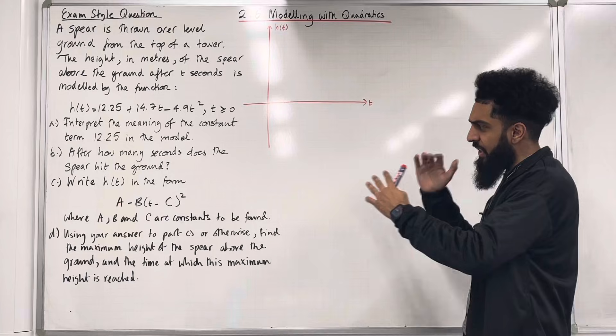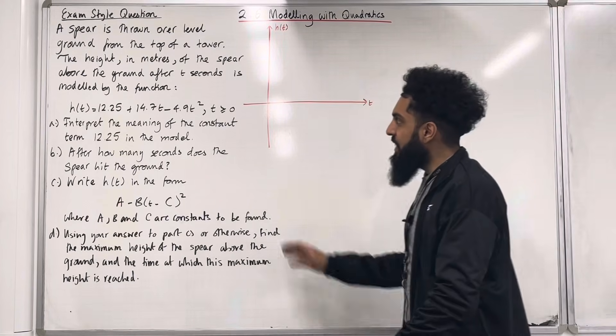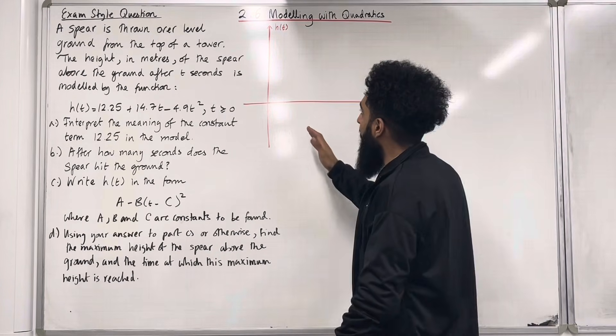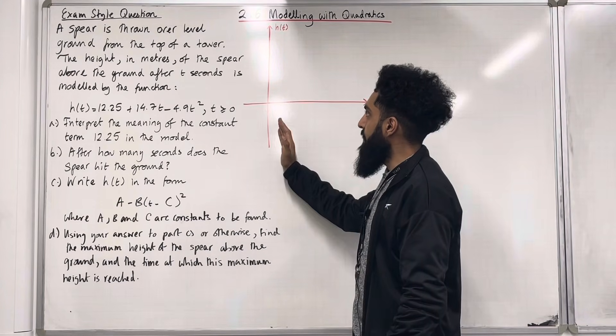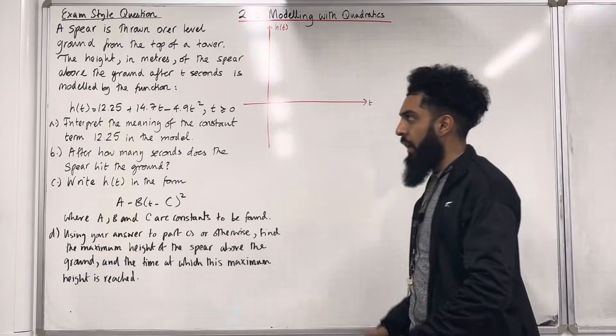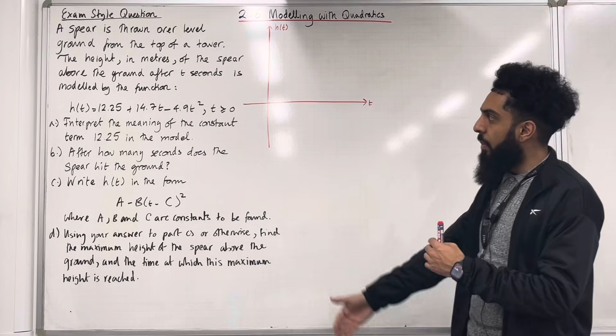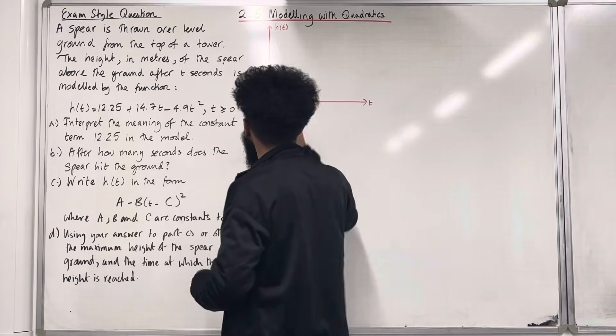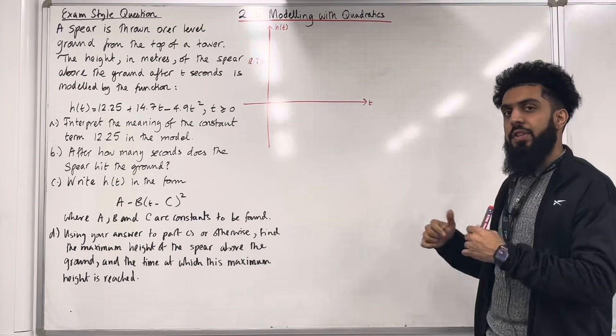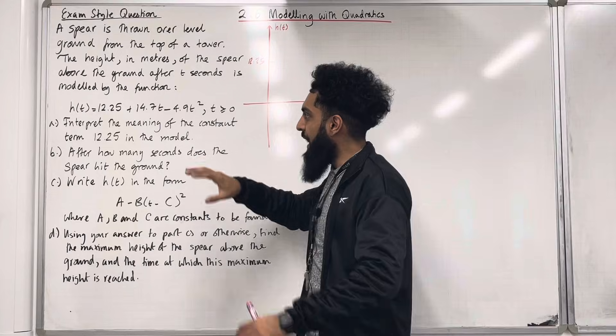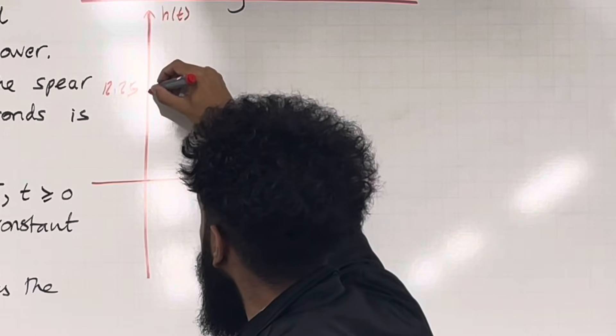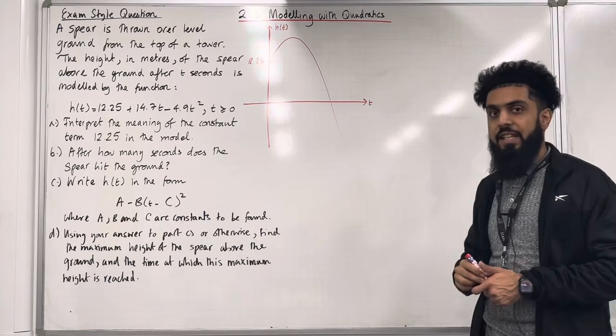Before I start parts A, B, C and D I'm going to actually model this scenario via a coordinate grid. So first of all what I want to do is work out the h-intercept. To work out the h-intercept I need to substitute t equals 0 into this particular function. So if I substitute t equals 0 the outcome will be 12.25. Now this function, if I look at the coefficient of t squared it is minus 4.9 hence the function represents a negative quadratic.